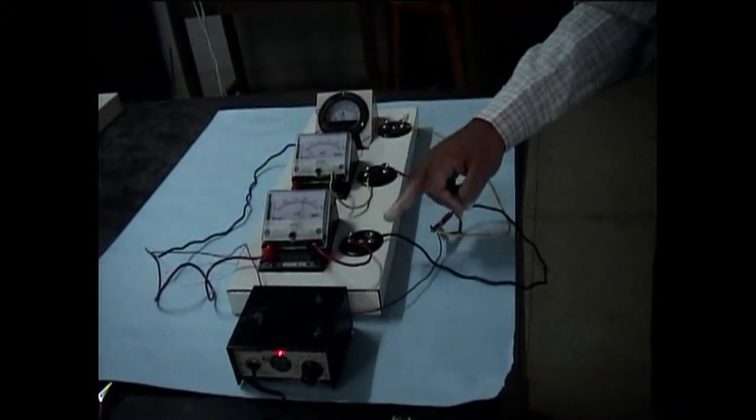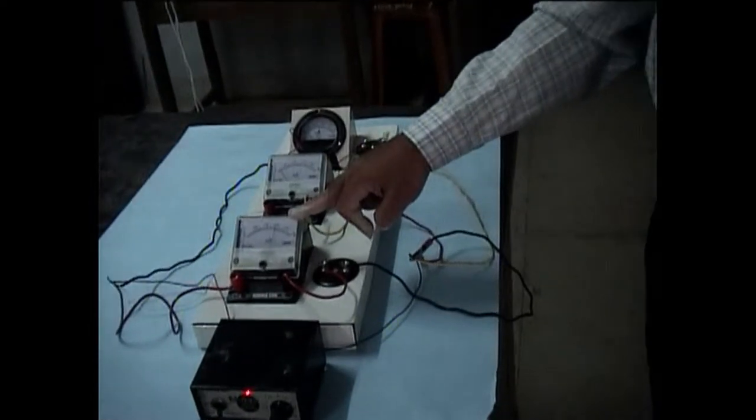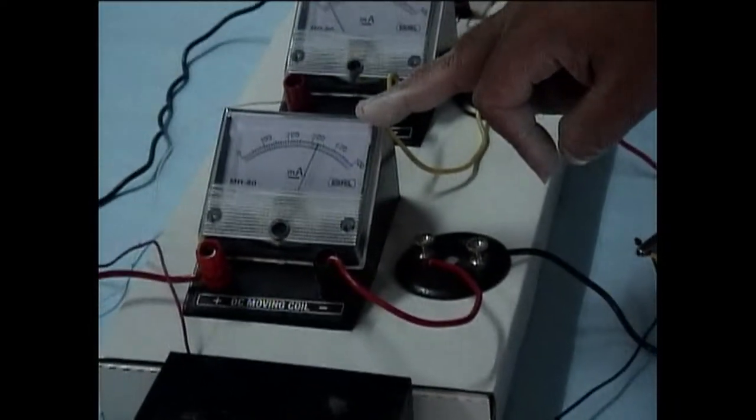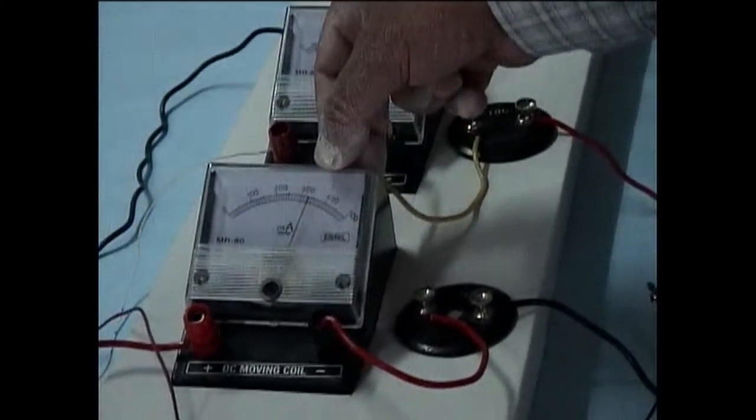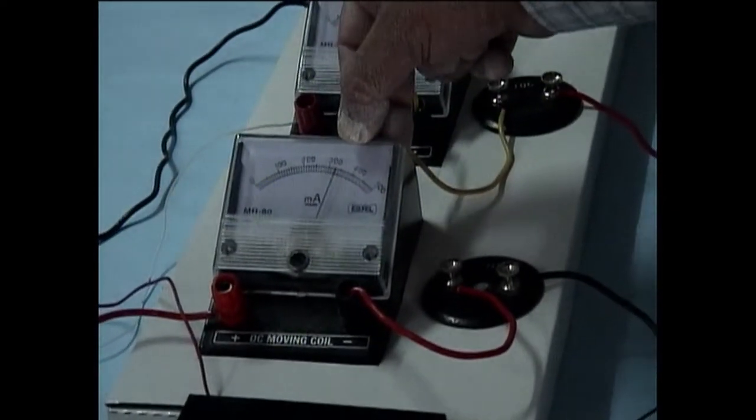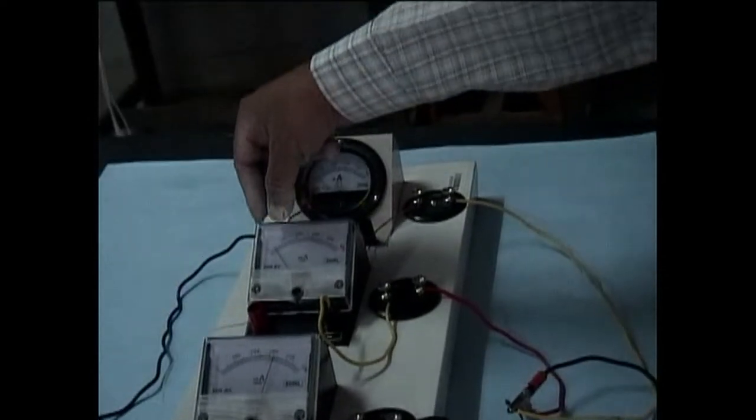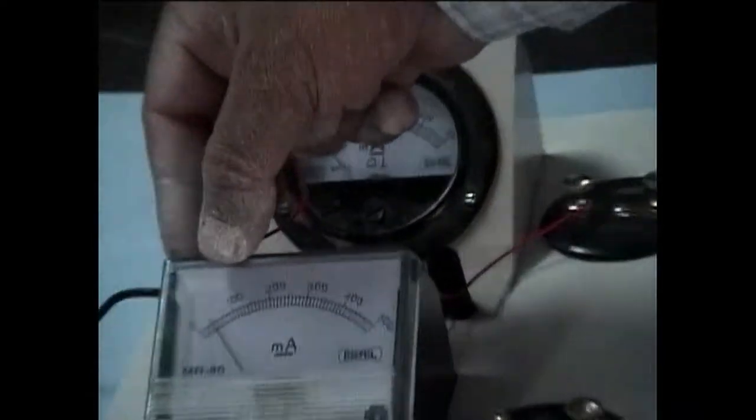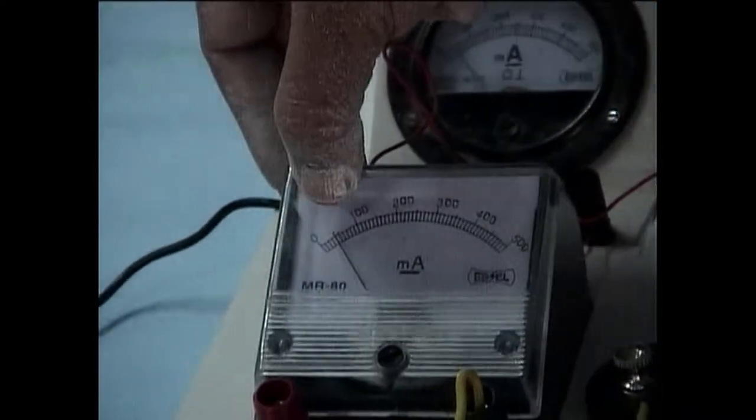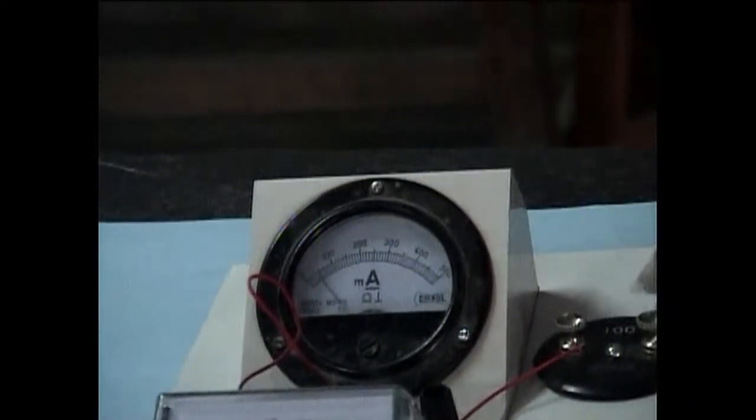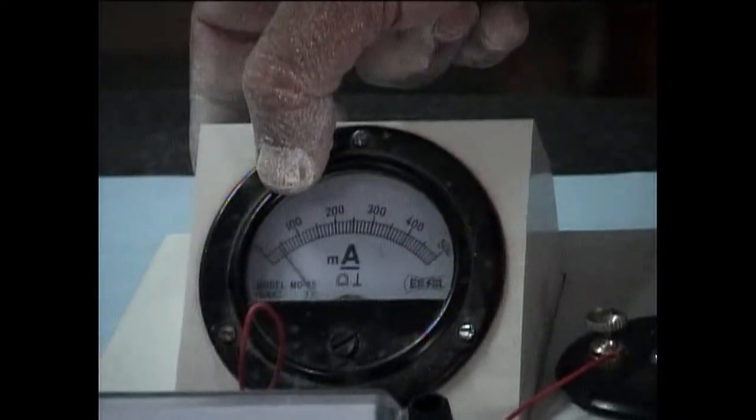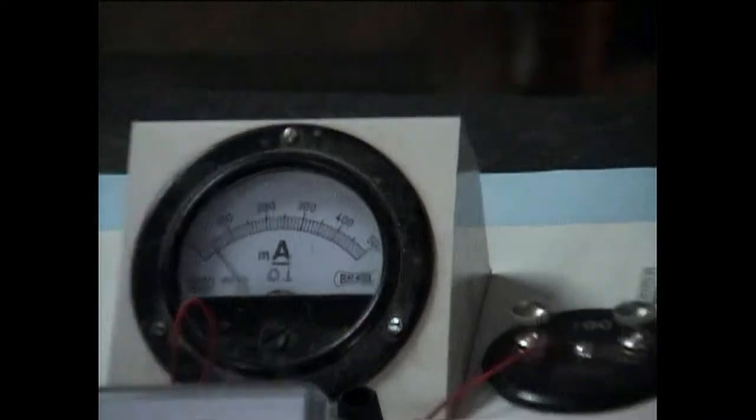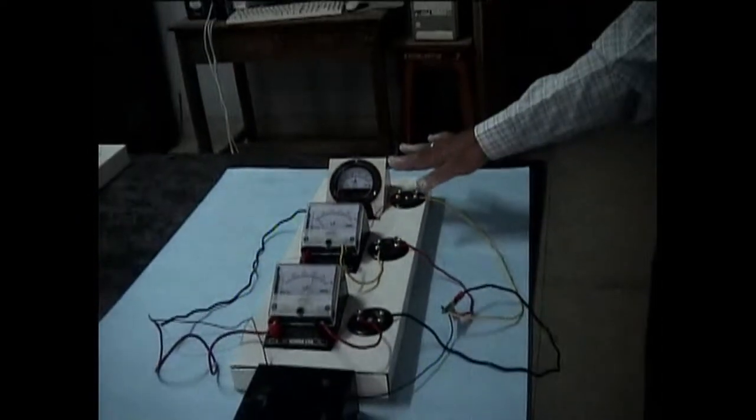you can observe that the current across the 10 ohm resistance is much more, nearly it is showing some 320. Whereas the current across 100 ohm resistor is 30, and here also you can observe this is also 100 ohm resistance which is again showing 30. So the current is inversely proportional to the resistance.